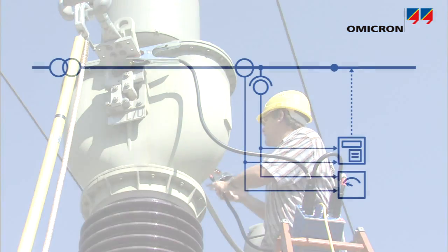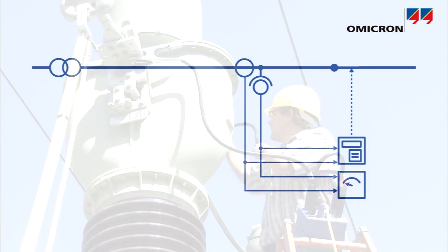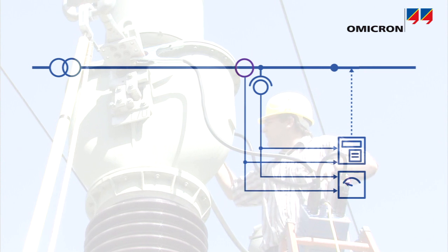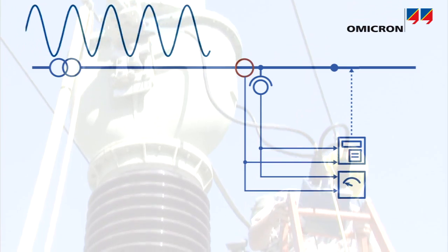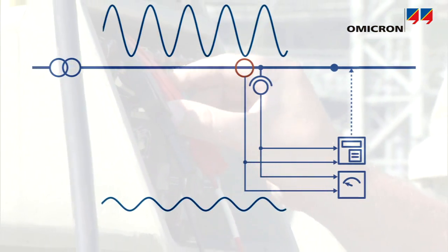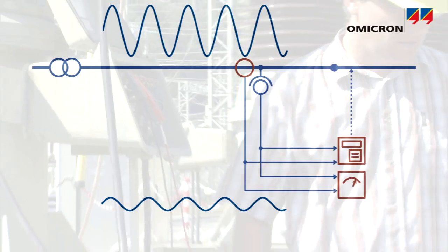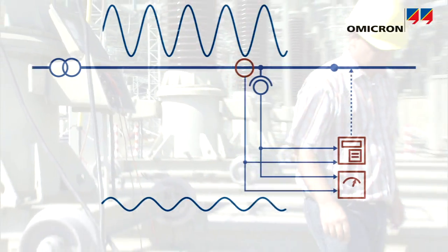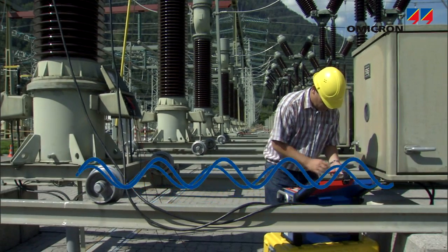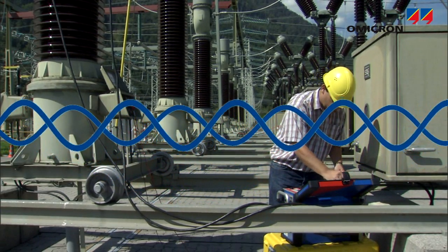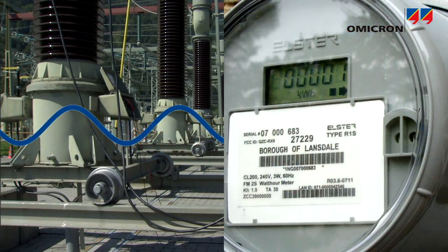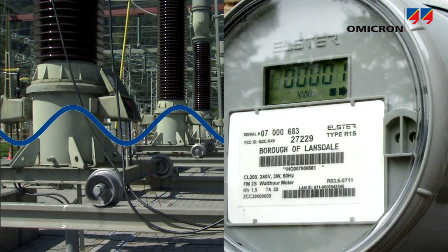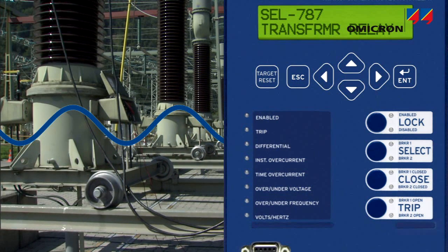The testing of individual components is based on their respective functions. Current transformers, or CTs, have to transform the primary current to a secondary current needed for control, protection, and metering systems. The secondary current must be accurate in amplitude, polarity, and phase in order to allow accurate metering and proper operation of the protection system.